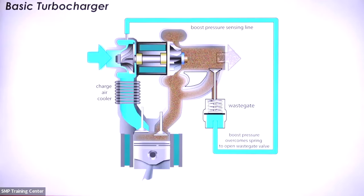At the most basic level, a turbocharger consists of just three major components: the turbine wheel, the compressor wheel, and the bearing system that supports the turbine shaft that connects the turbine and compressor wheels together. The turbine wheel is responsible for converting heat and pressure into rotational force, and high pressure from the exhaust manifold will always seek low pressure. As the exhaust exits the cylinders and flows to the exhaust, it spins that turbine wheel and converts kinetic energy into rotation.